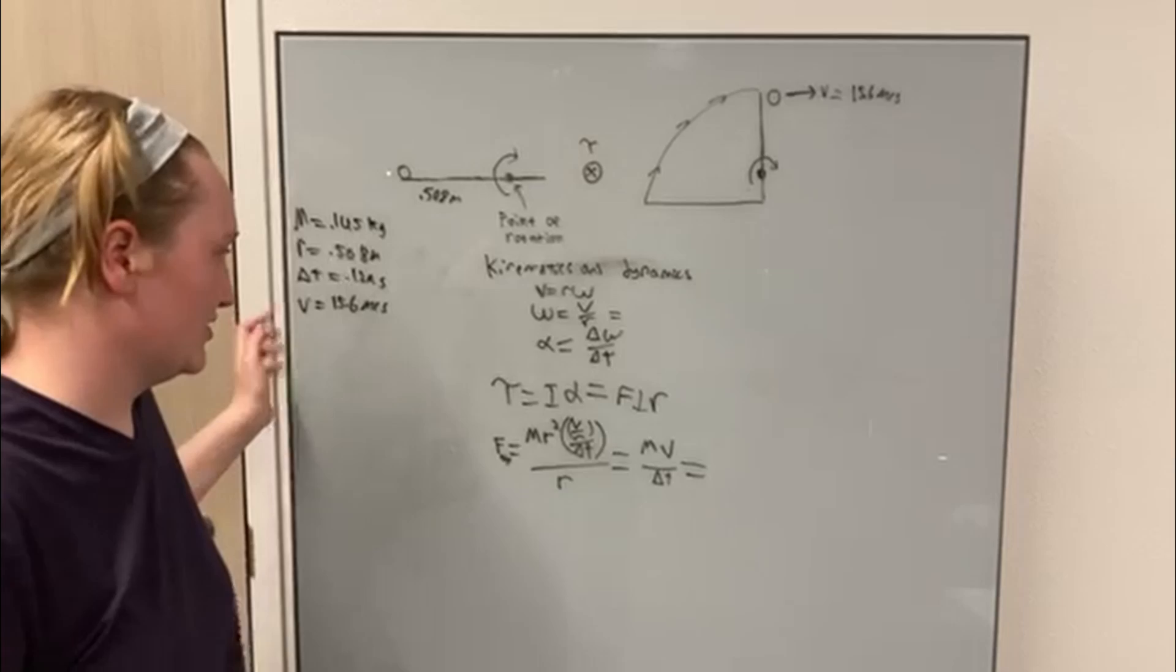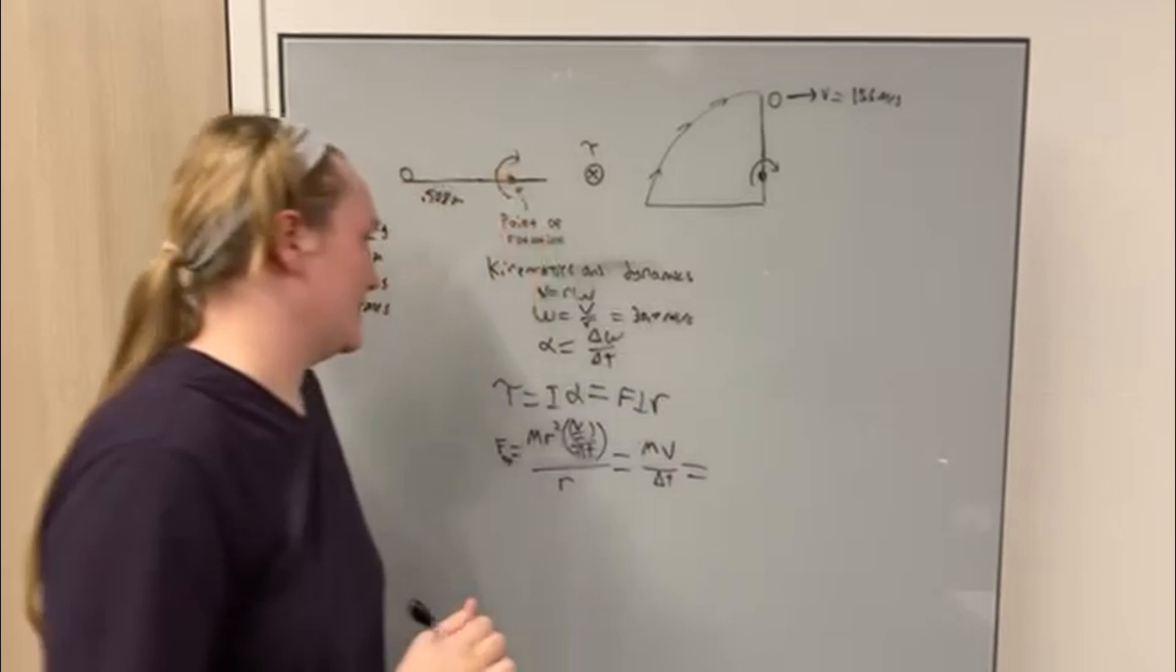And after we do the calculations, we get 30.7 radians per second for the angular velocity.